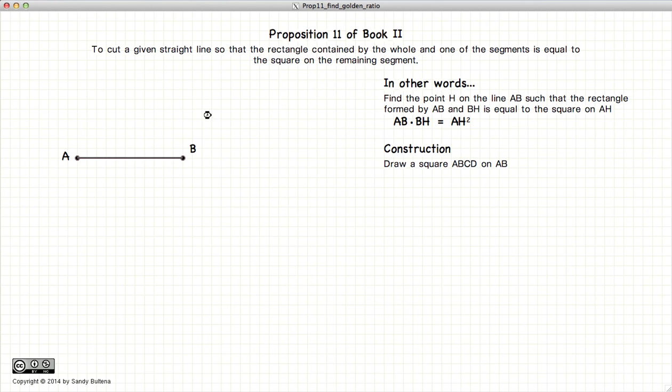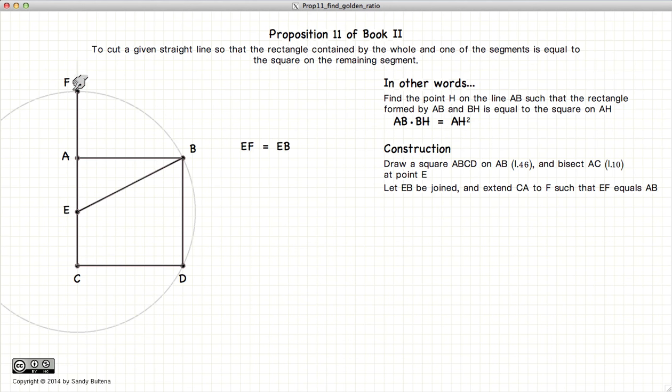The first thing we're going to do is draw a square on AB, draw a line from E to B, and extend AC upward, and define a point F such that EF is equal to EB.